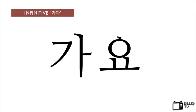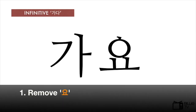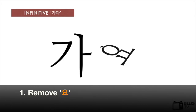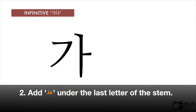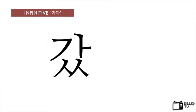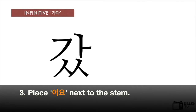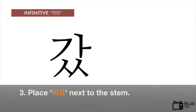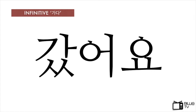Now we're going to make this verb into one in the past tense. First, remove 요. Second, add 쌍시옷 under the last letter of the stem. And the final step is to place 어요 next to the stem. So, 가요 becomes 갔어요, which means 'went.'